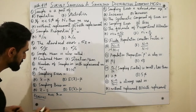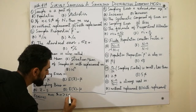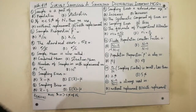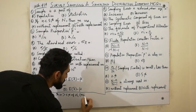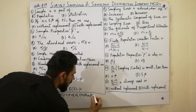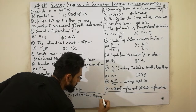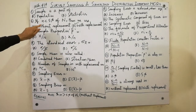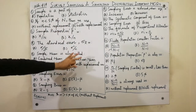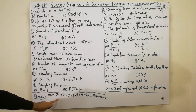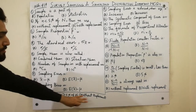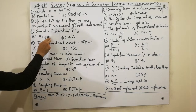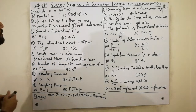If small n is greater than five percent of capital N, then we use without replacement. Must remember: if small n is less than five percent of capital N, use with replacement; if small n is greater than five percent of capital N, use without replacement.